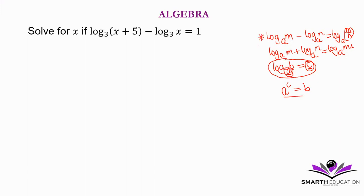We're going to use this law. It means log₃((x+5)/x) = 1. Then we change this from logarithmic form to exponential form. This is the base, this is the exponent. So 3^1 = (x+5)/x.